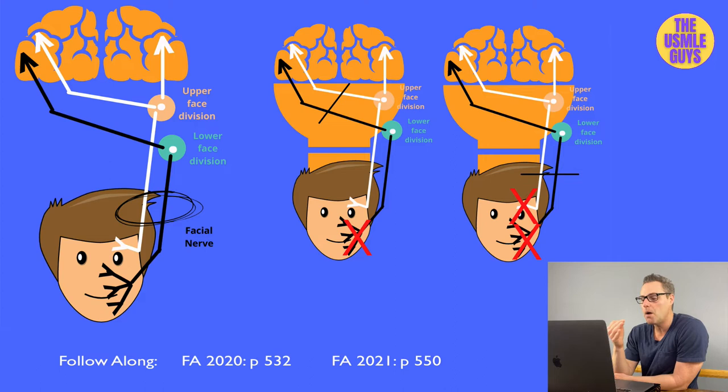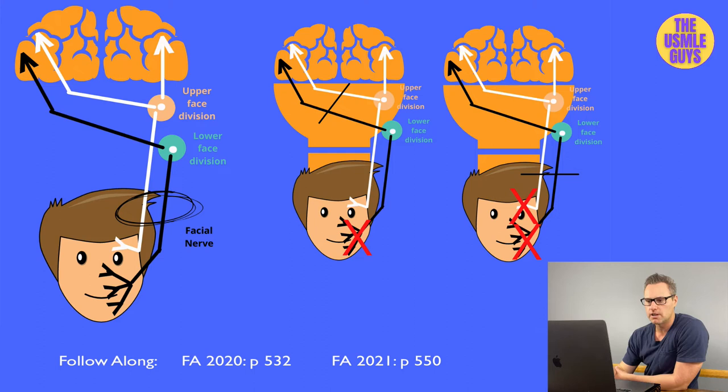Bell's palsy is most likely to develop after reactivation of HSV, but other known causes include Lyme disease, herpes zoster, sarcoidosis, diabetes, and tumors such as parotid gland tumors.